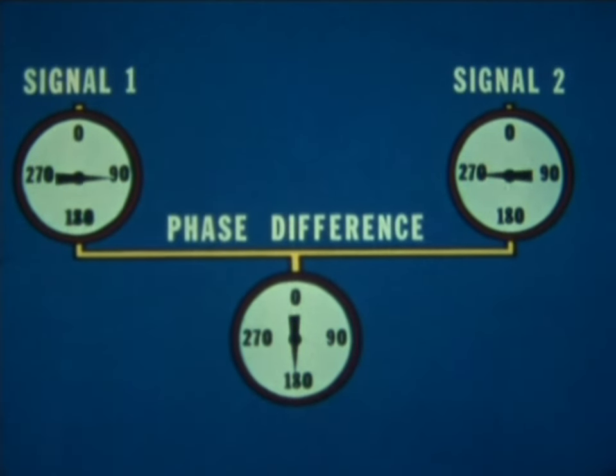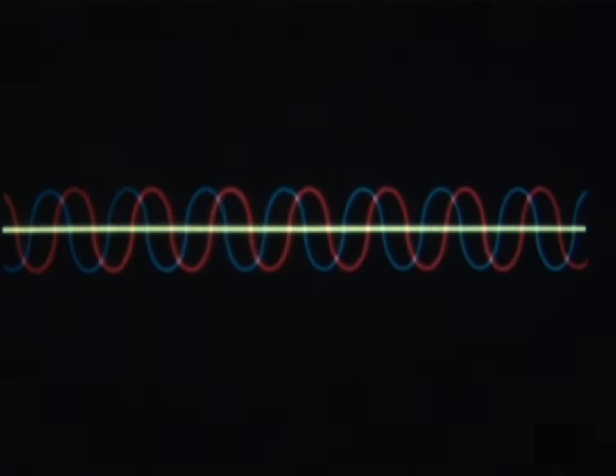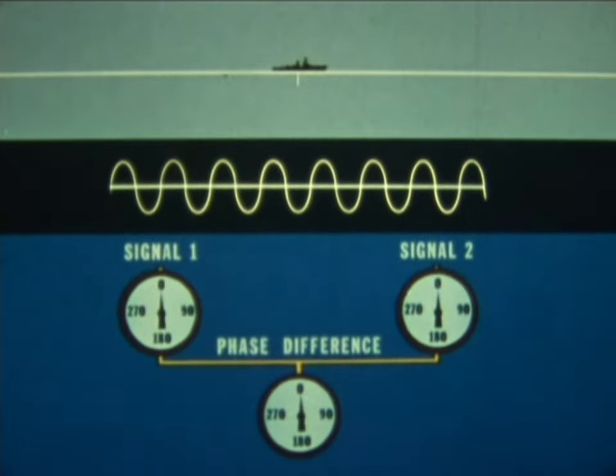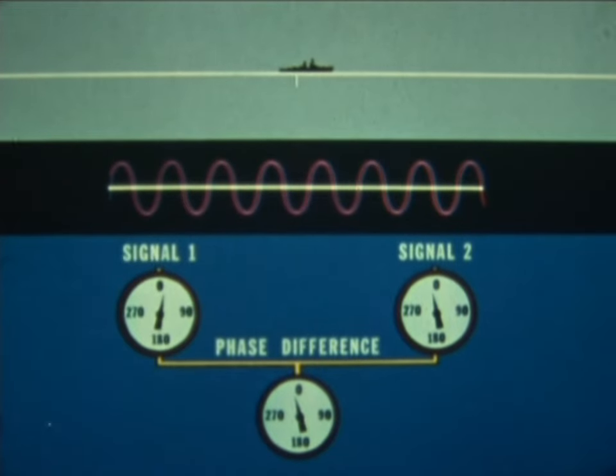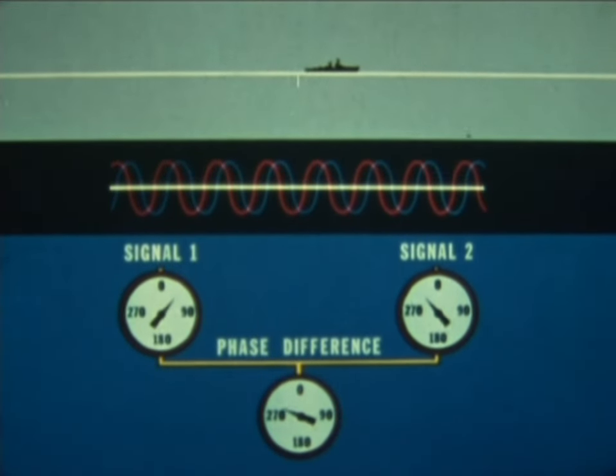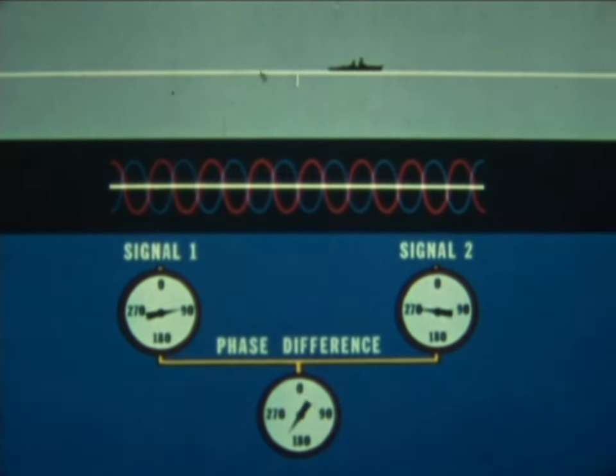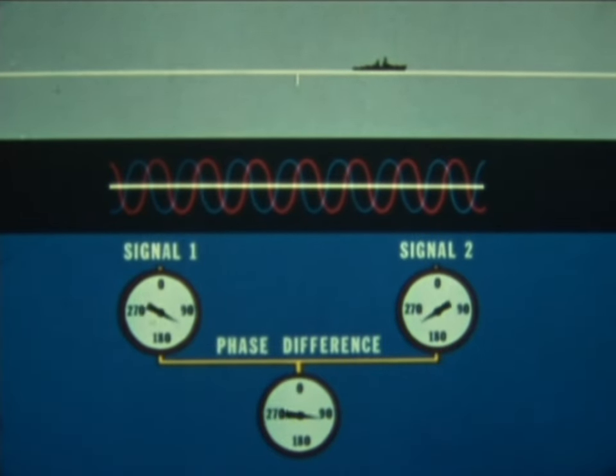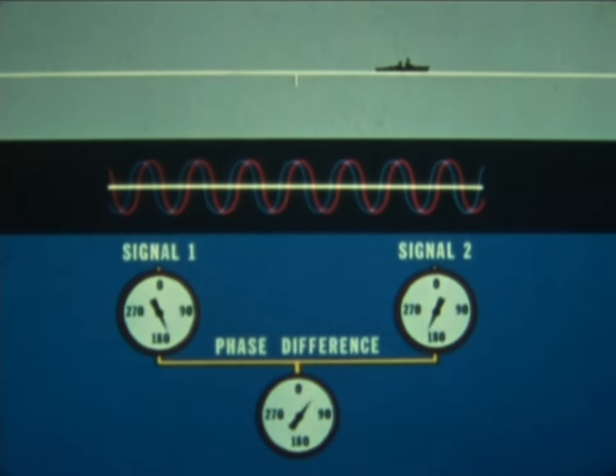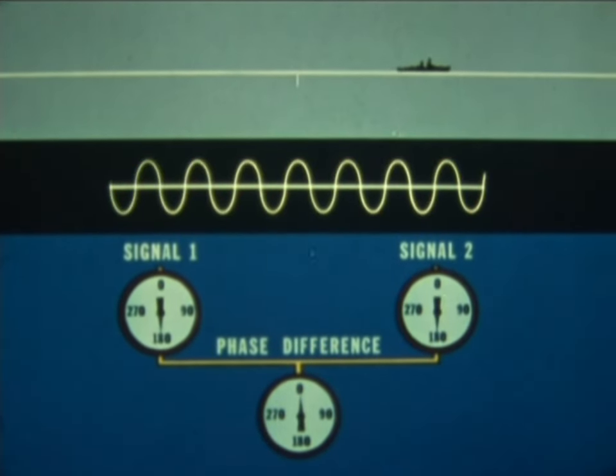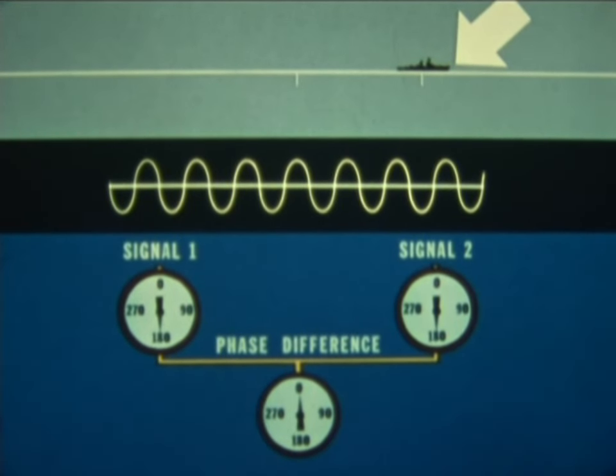In our simplified receiver, you can see this phase difference being measured. The sine waves simply show the changing phase difference graphically. As the receiver moves away from the midway line of position, also called a zero phase contour line, the phase difference gradually increases from zero through 360 degrees or back to zero, thus locating another zero phase contour line.